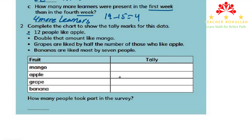For apple, we use tally marks to show 12. We group each 5 marks, so that gives us 5, 10, and then 2 more to make 12. We are done with the first part.